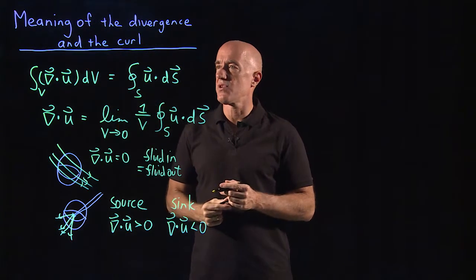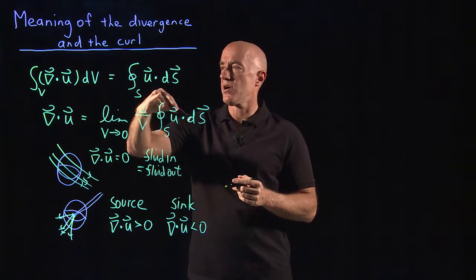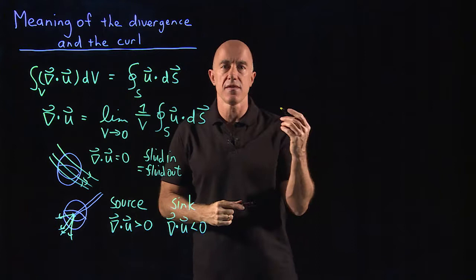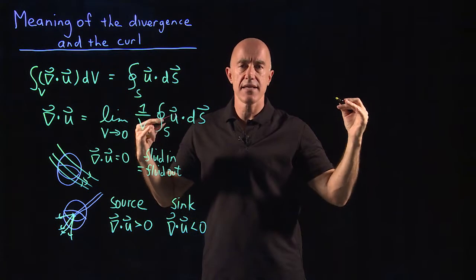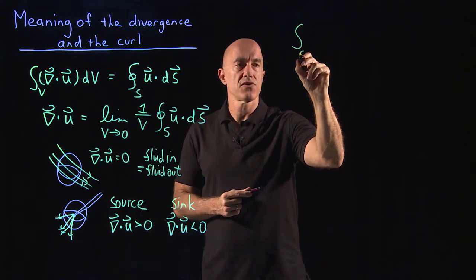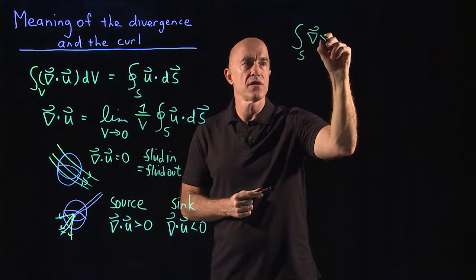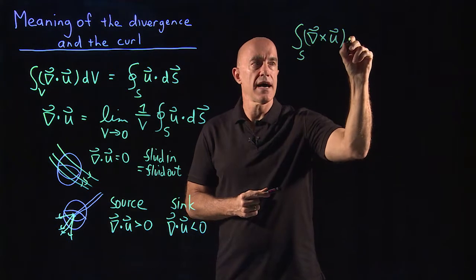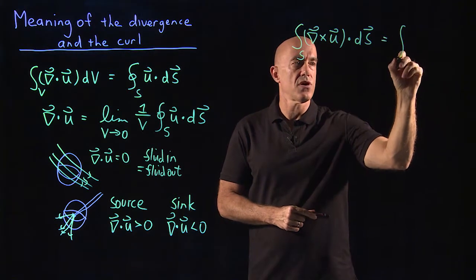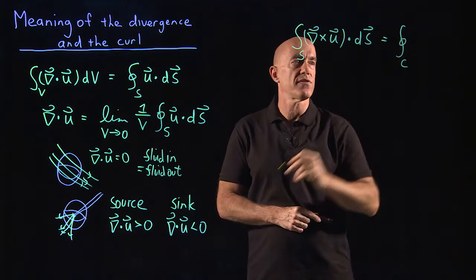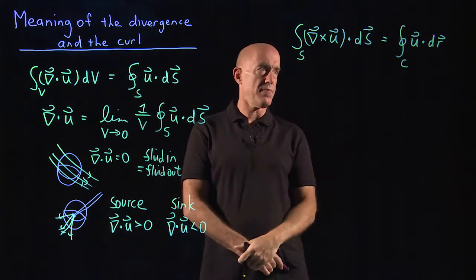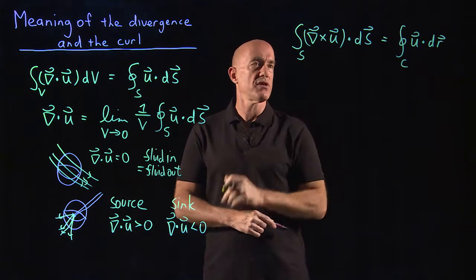So what about the meaning of the curl? We use Stokes theorem to get the meaning of the curl. Stokes theorem involves a surface and a curve: the integral over the surface of (del cross u)·dS is equal to the integral over the curve bounding the surface of u·dr. So we have del cross u here, and we have del cross u.